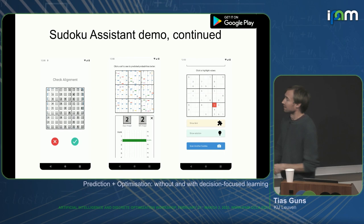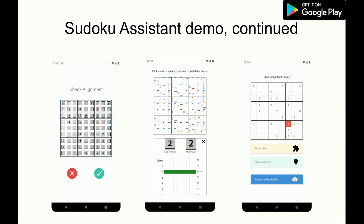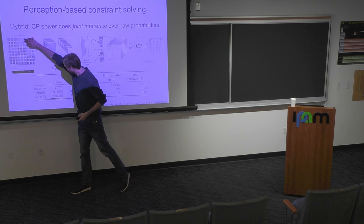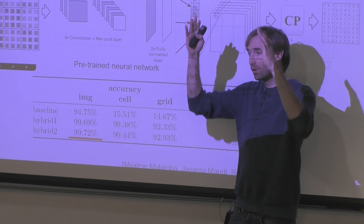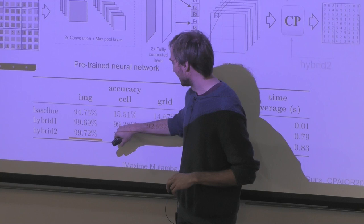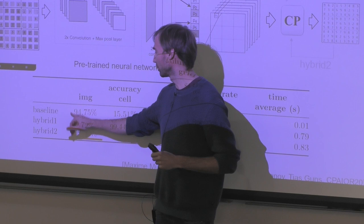That's what it looks like in the demo. You take a picture, it shows you all of the probabilities, and people can look around on it. If it corrected one of the digits, it shows you which one it corrected. The image accuracy is on each of the individual cells, and the grid accuracy is how many of the instances — all 81 cells of the entire image — are accurate.